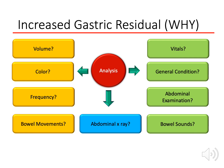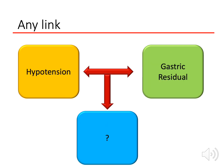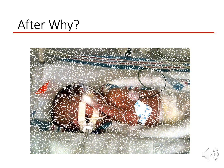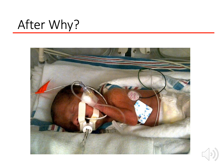Sometimes a patient presents with more than one problem — for example, hypotension and gastric residual together. After analyzing each problem separately, ask yourself: is there a diagnosis that links both problems? In this case, sepsis and necrotizing enterocolitis come to mind. Once you ask 'why,' gather information, and analyze, the picture becomes clear and you can make decisions and manage the patient.